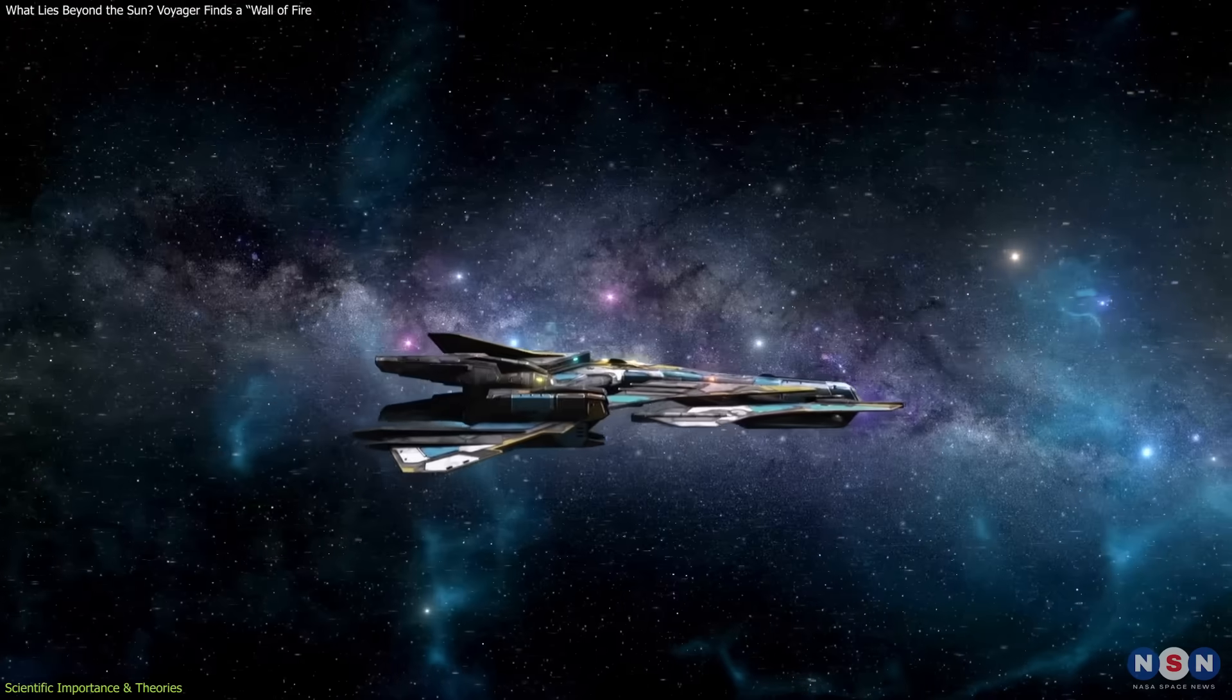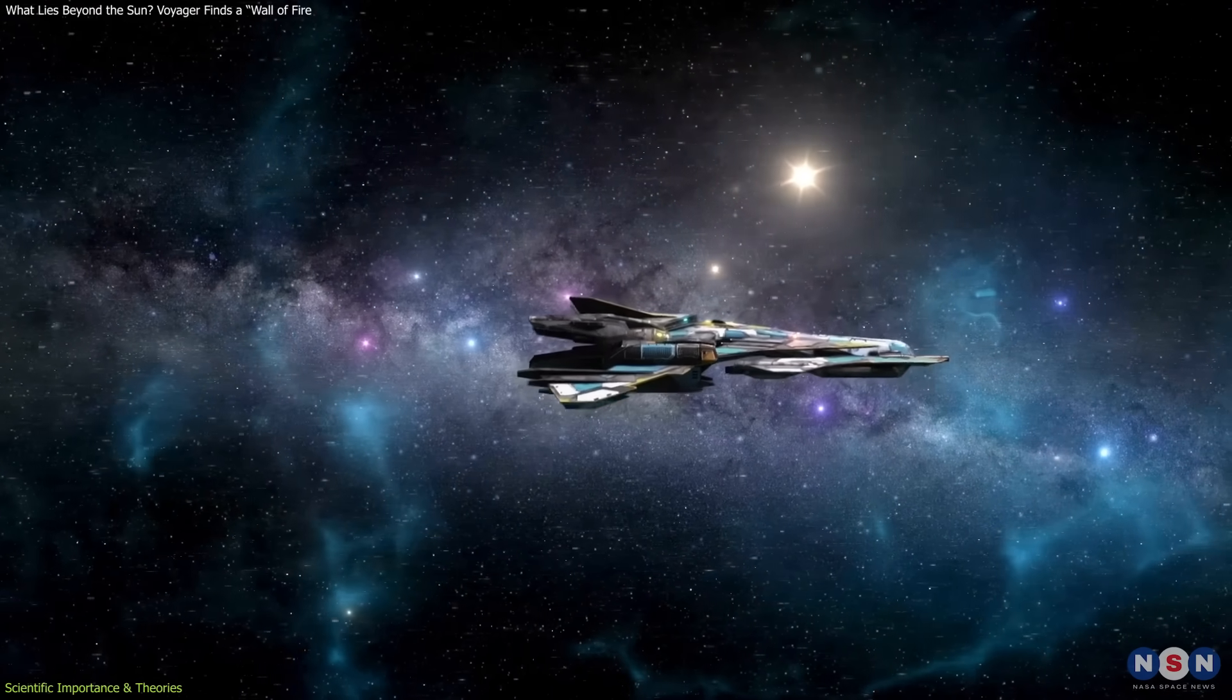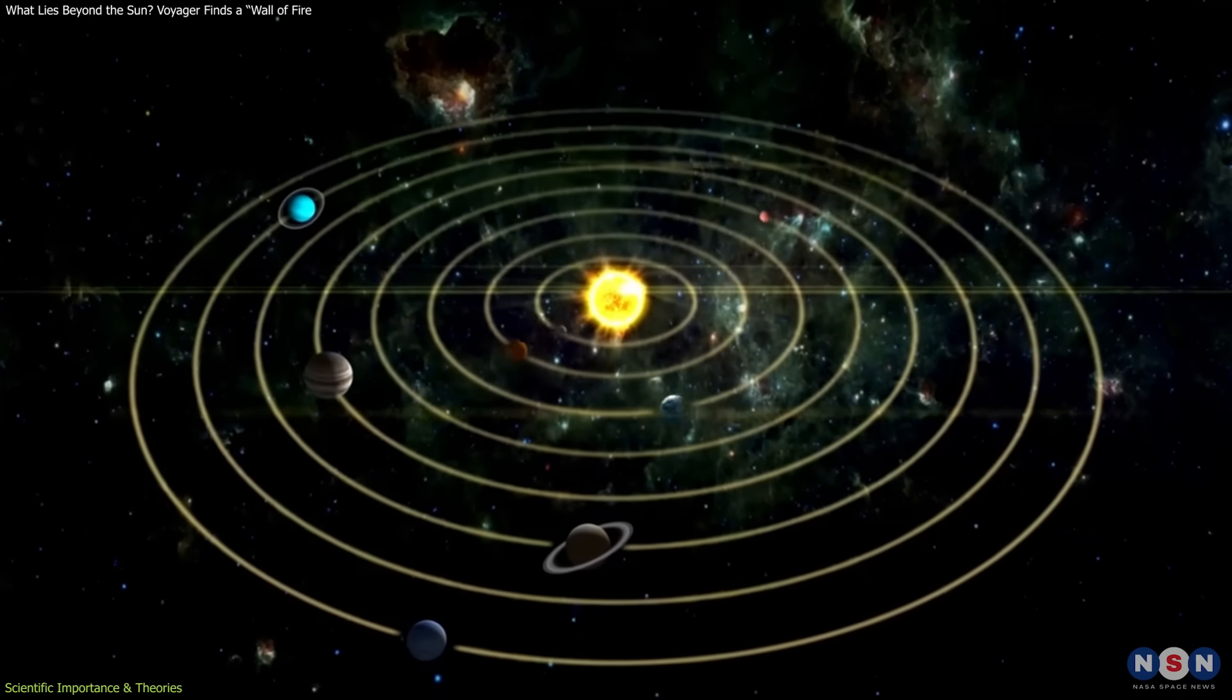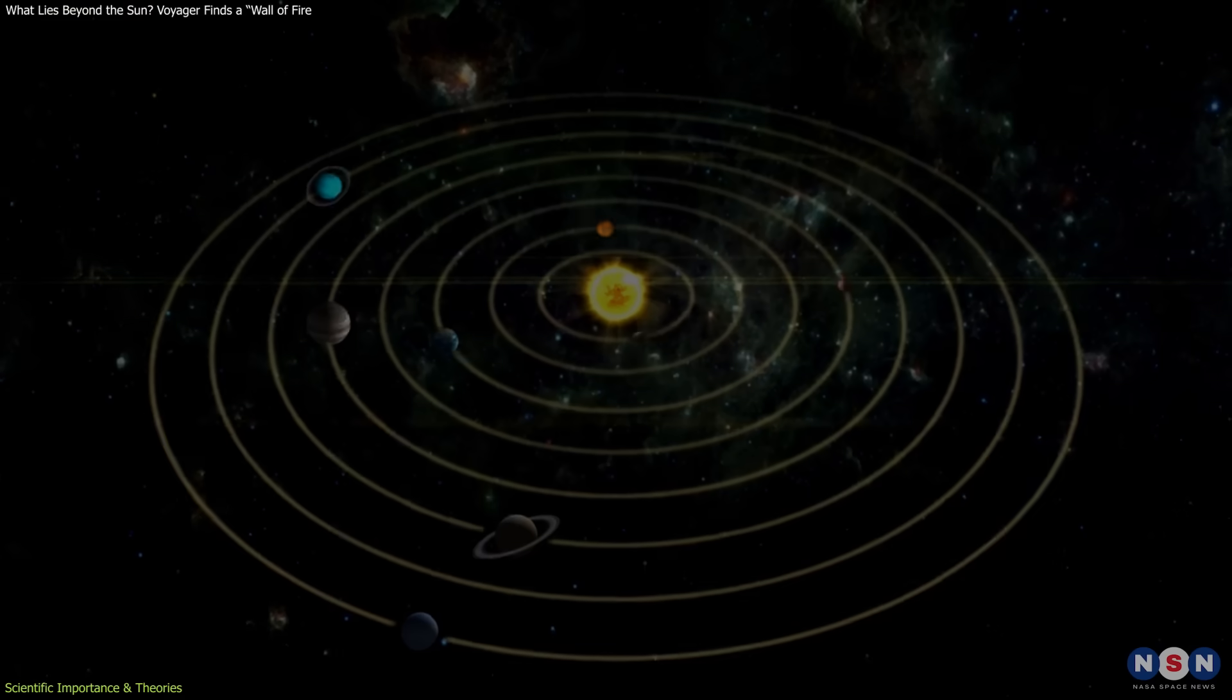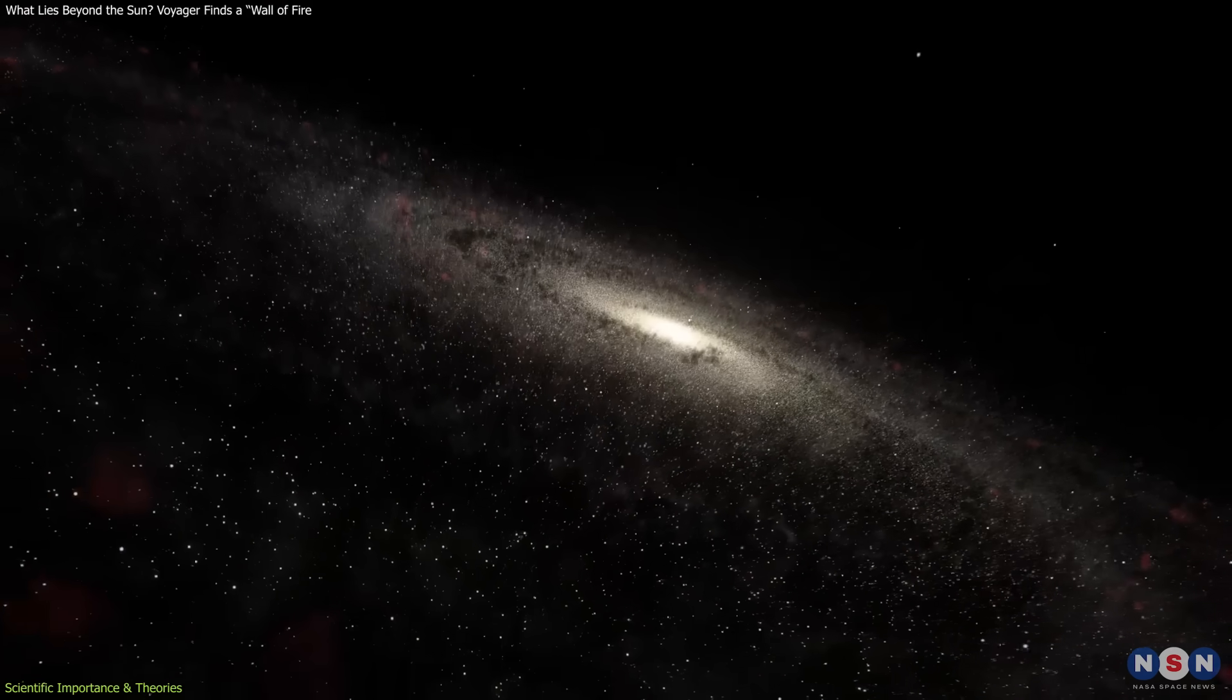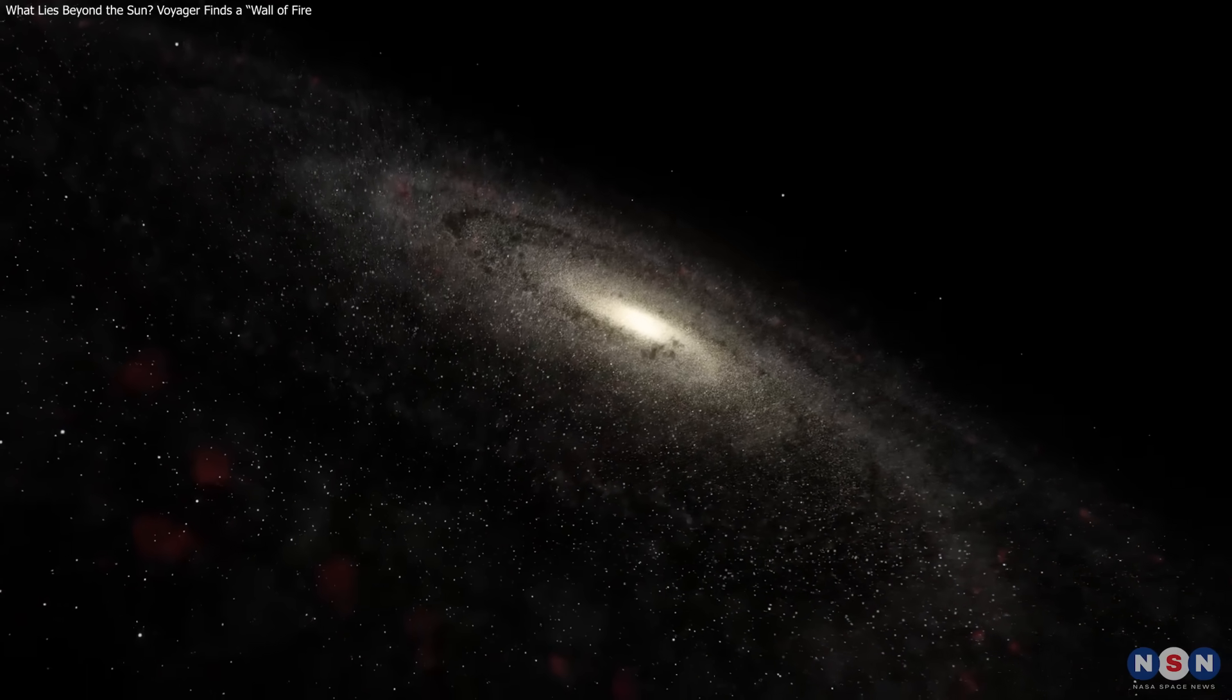This discovery shows the solar system's edge isn't a simple boundary, but a complex, evolving zone linking our sun to the galaxy in ways we're only starting to understand.